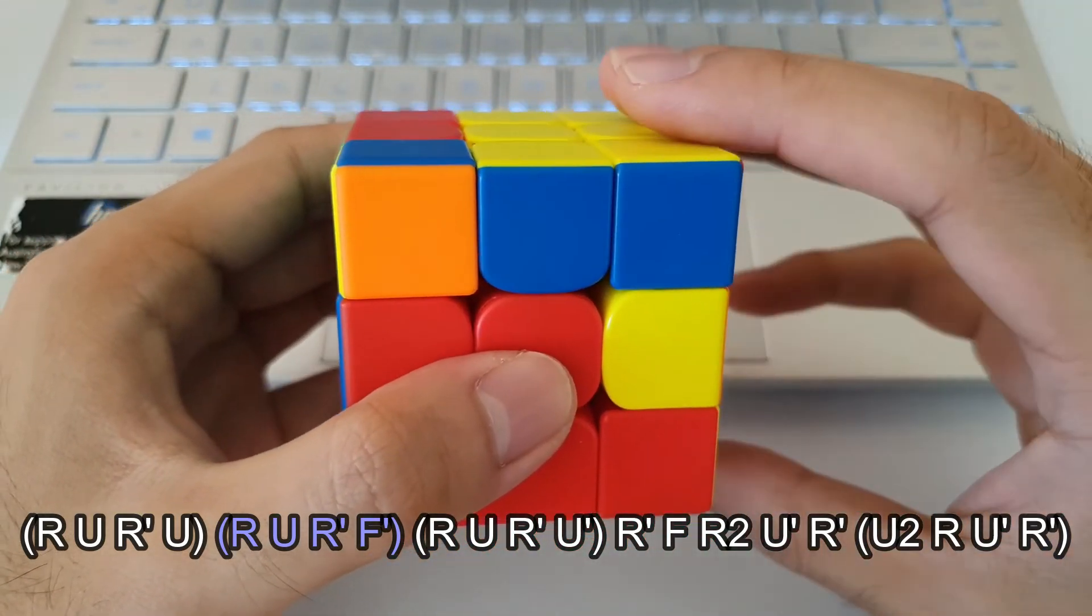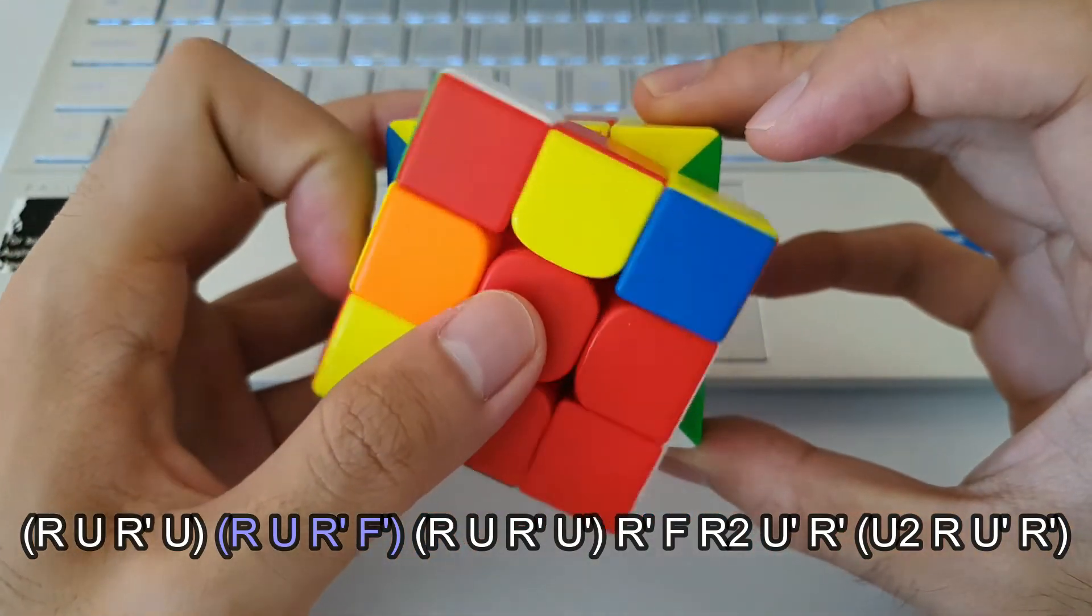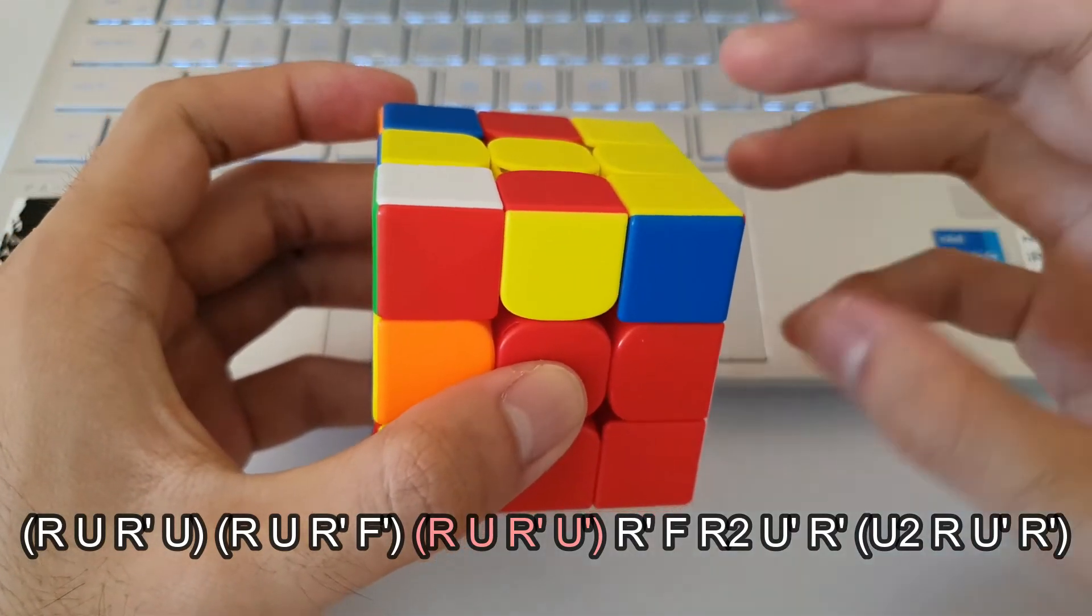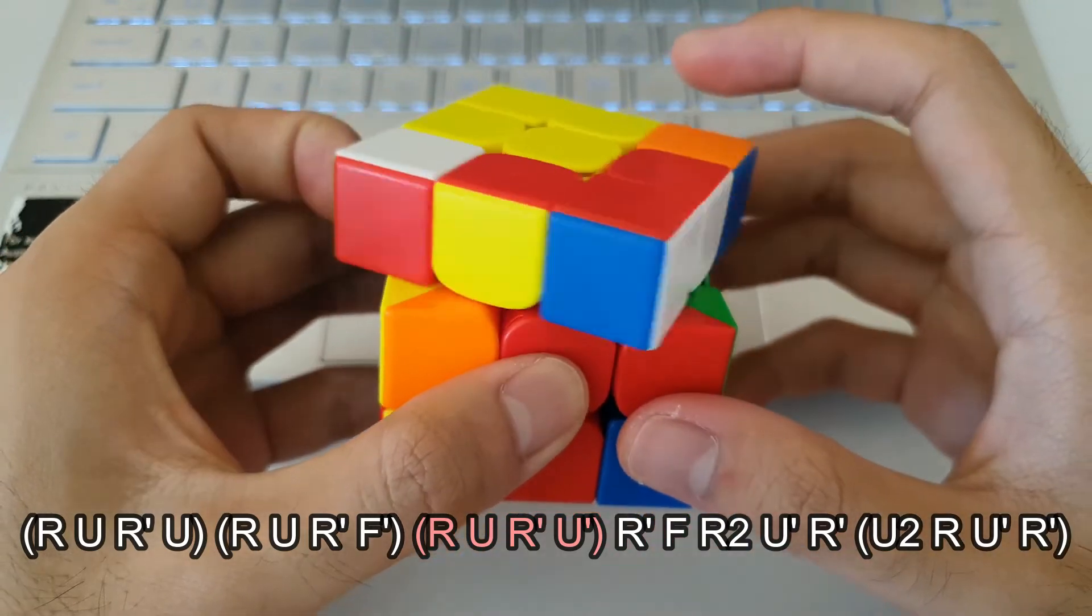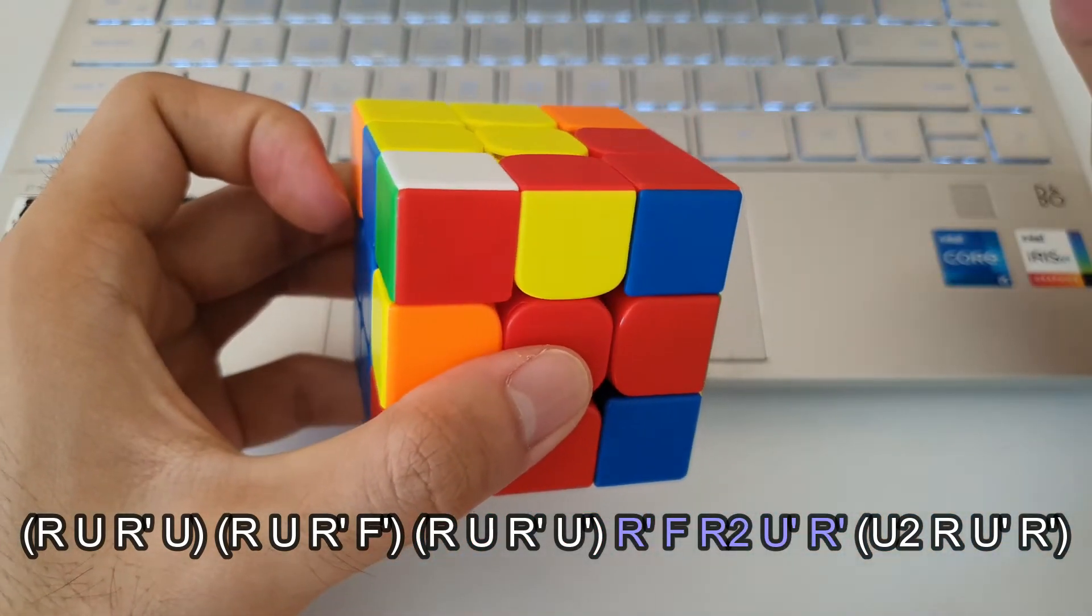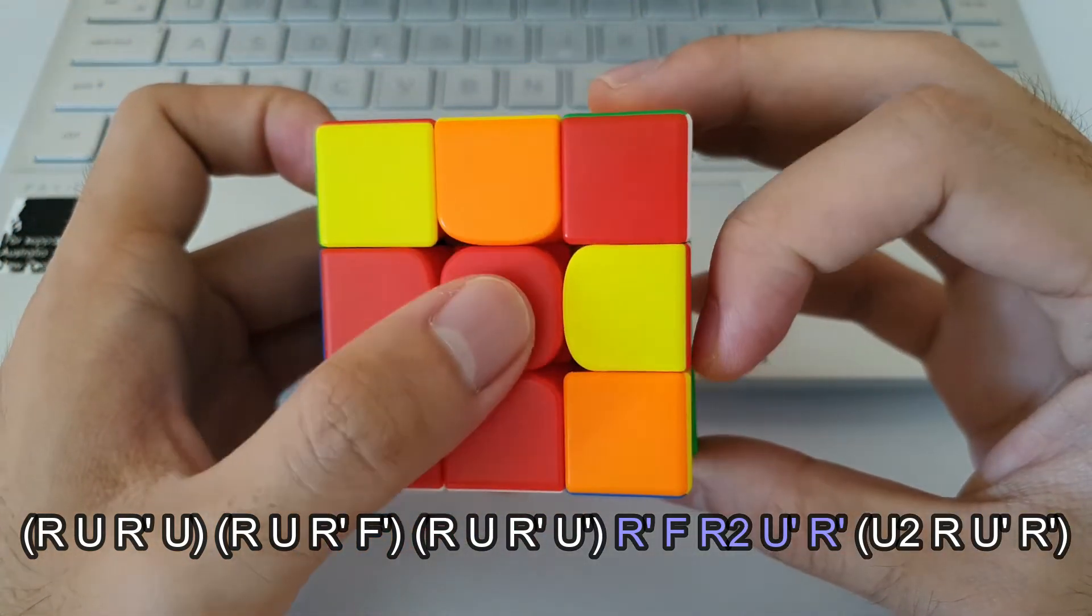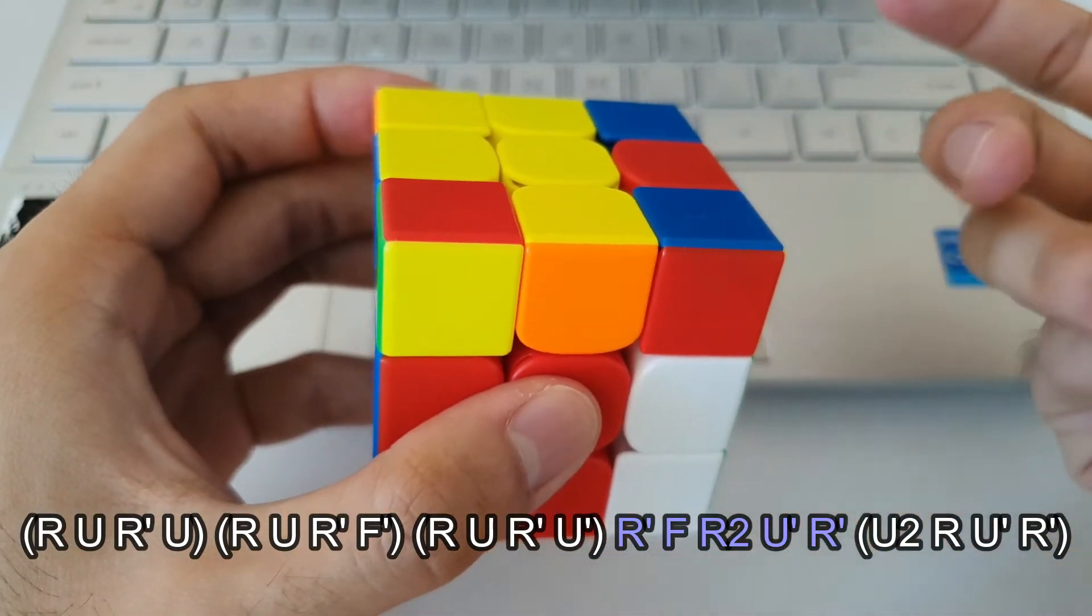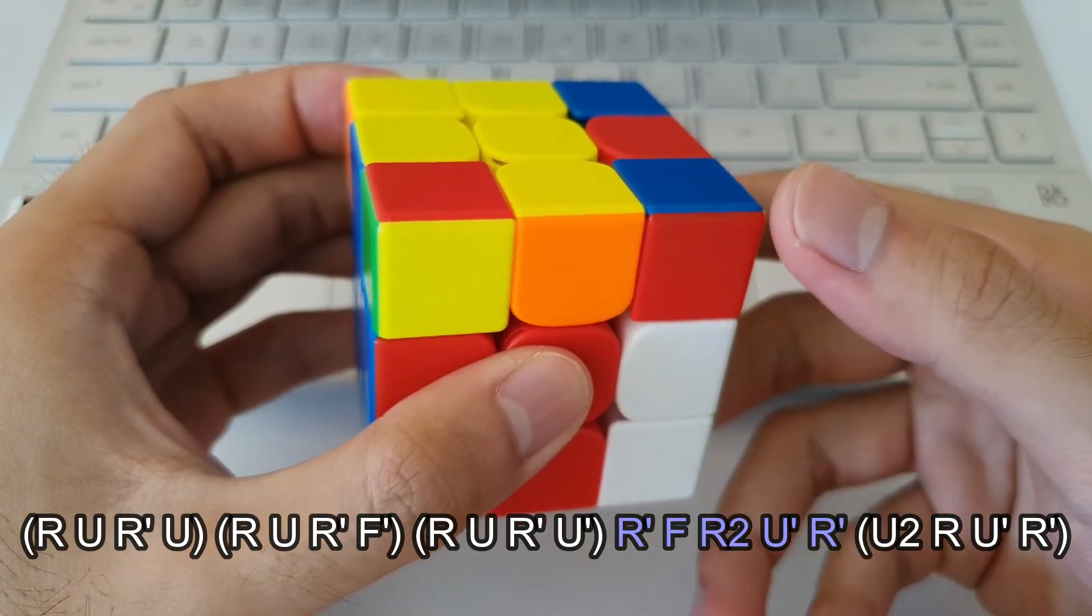So as we all know, the J-perm starts off with the R U R' F', and then followed by the next four moves, which is the sexy move R U R' U'. Now the next part, as I mentioned in my J-perm tutorial, I like to remember how my hands move. So R' F R2. These moves are quite easily remembered if you keep track of how your fingers and hands move. That's followed up by a U'.